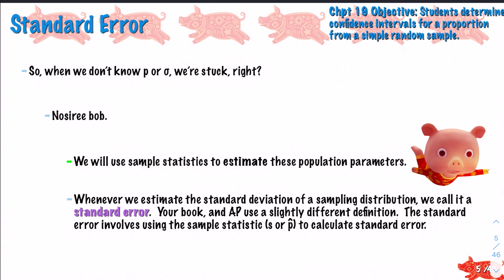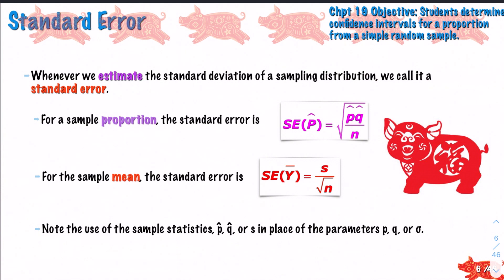Are we stuck? No, we are not stuck. We will use sample statistics to estimate these population parameters - that's kind of the magic trick that statistics can do, as long as we meet certain conditions which we will verify. Whenever we estimate the standard deviation of a sampling distribution, we're not going to call it the standard deviation - we're going to call it the standard error. Your book and the AP use a slightly different definition; the standard error involves using the sampling statistic, either s or p-hat, to calculate standard error.